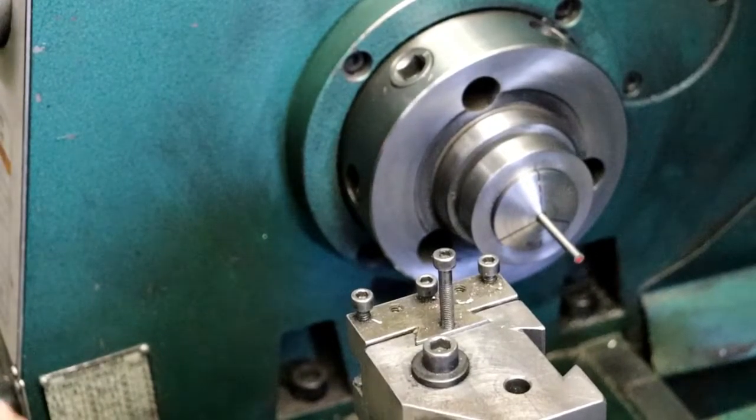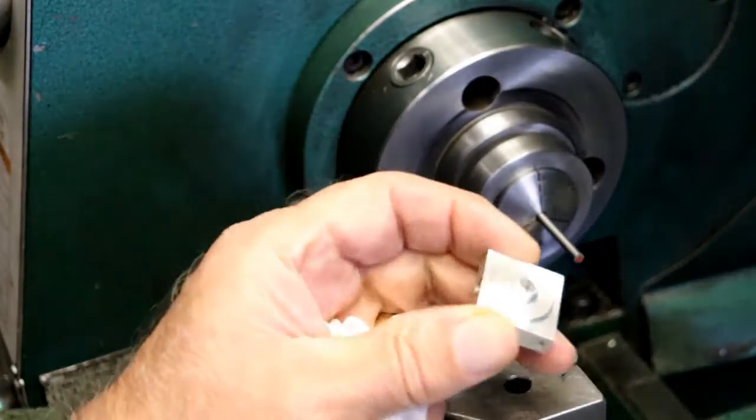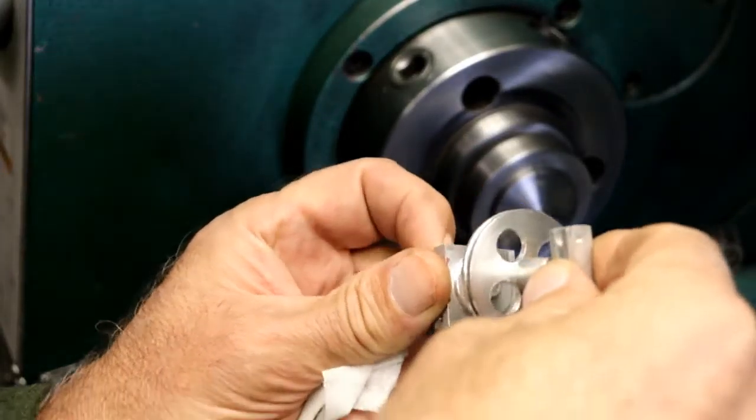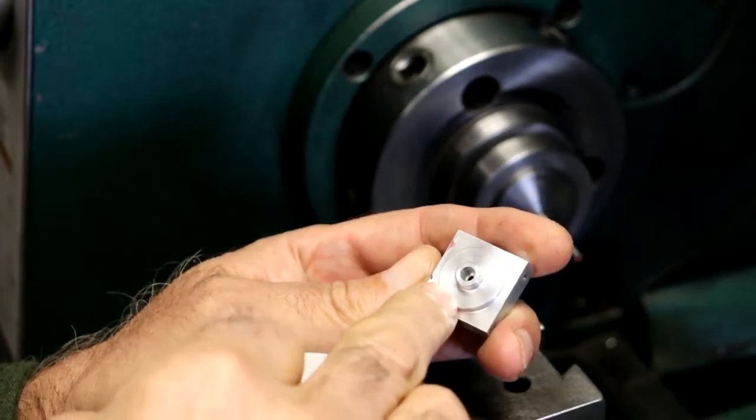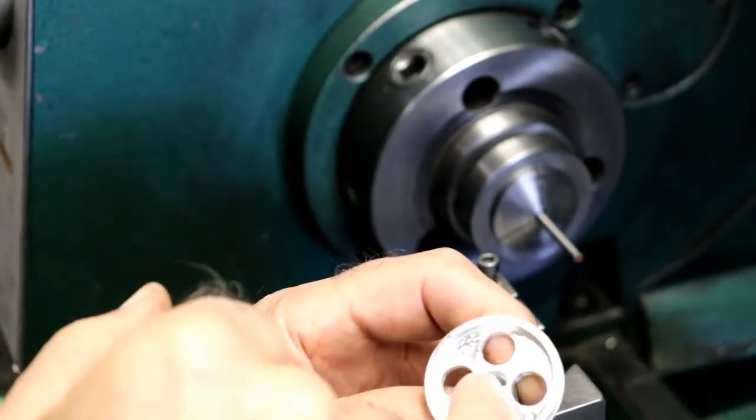Okay, we're over on the lathe. I'm going to make the spud that goes into this that will ride on the ball bearing. It needs to be 700 thou long, and the end that goes up against the ball bearing I'm going to radius fully.